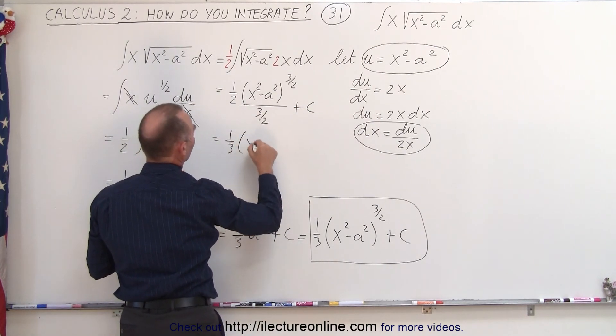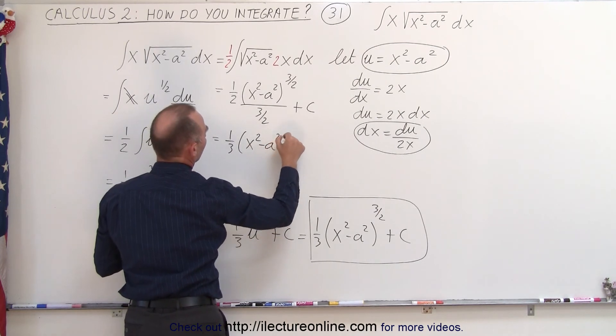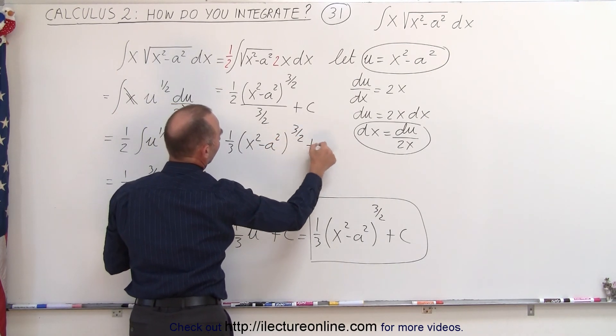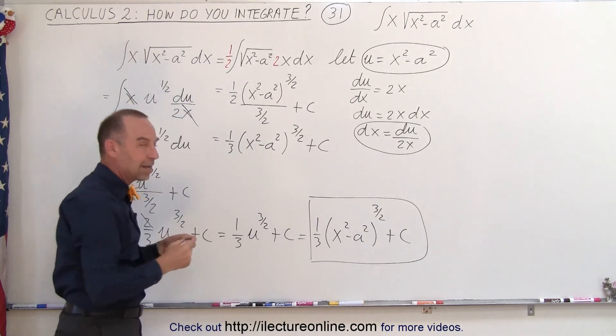we get 1 third times x squared minus a squared, to the 3 halves, plus the constant of integration, which is exactly what we have over here.